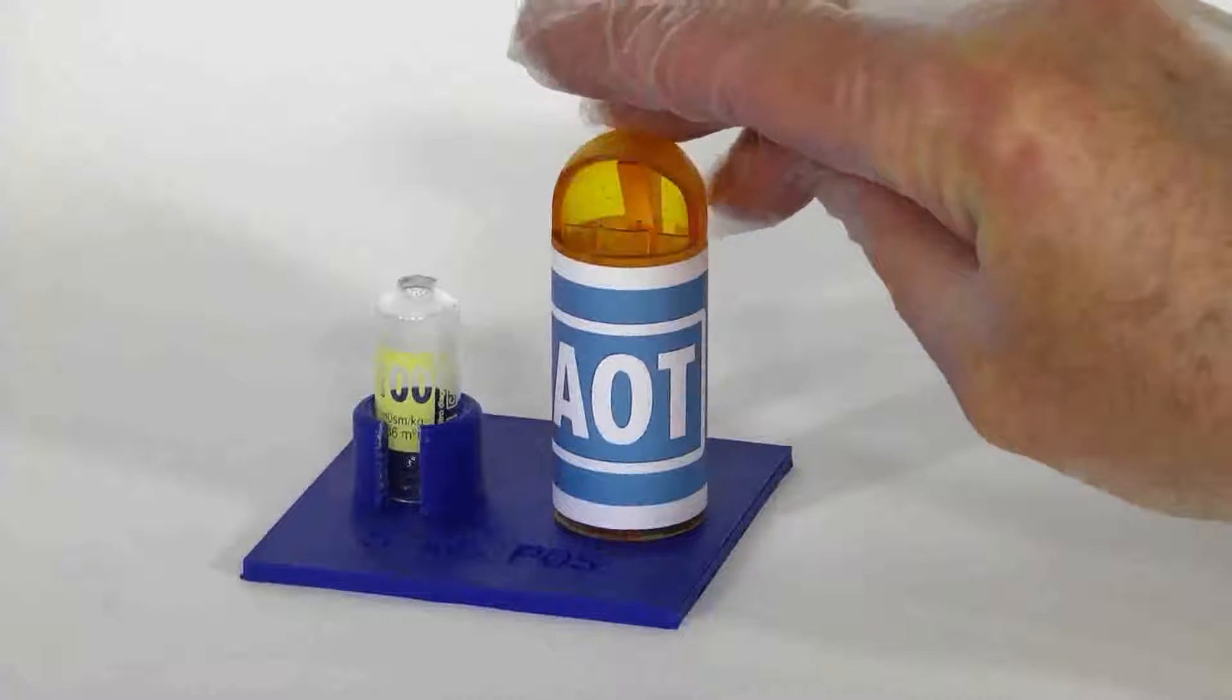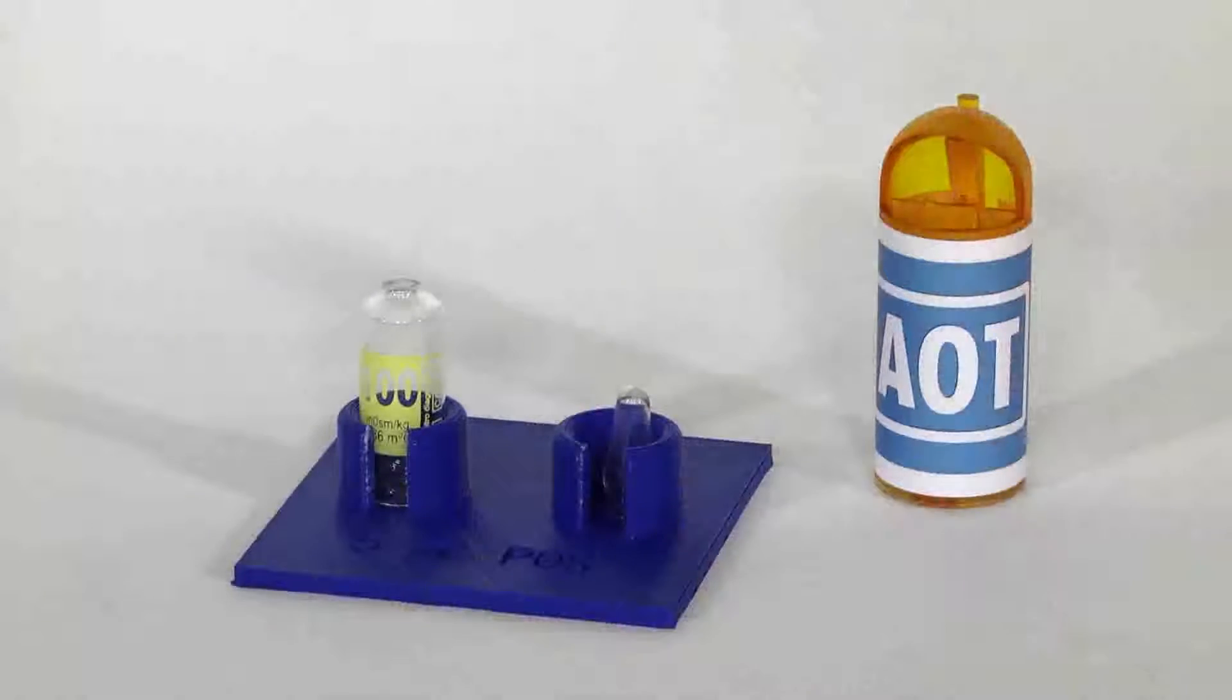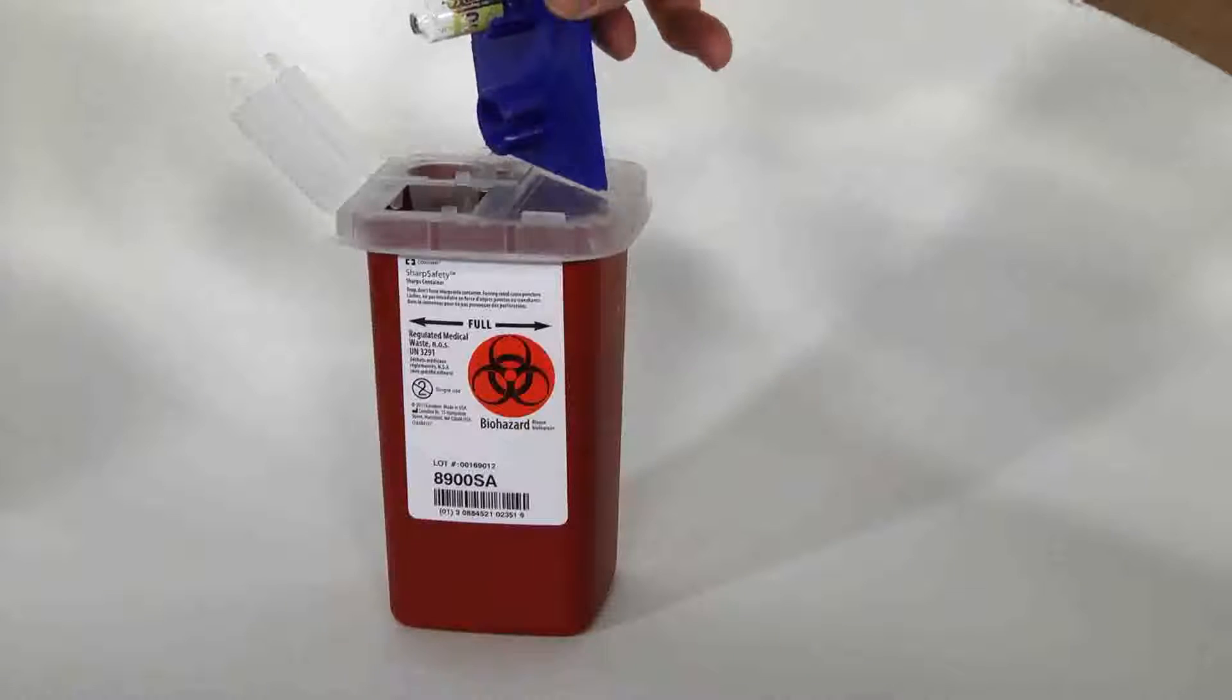Lift the opener straight up and the neck will be captured in the base. You can now dispose of both the body and the neck by picking up the base and inverting it above a sharps container.